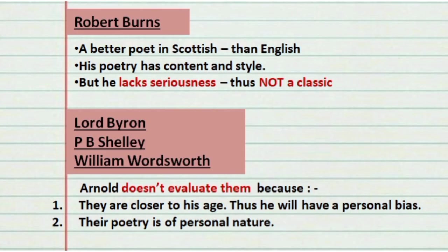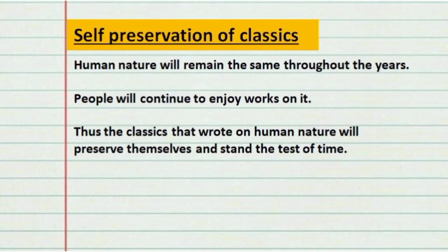Finally, regarding the Romantics — Lord Byron, P.B. Shelley, and William Wordsworth — Arnold doesn't actually take a stand about them because their age is very close to his own and he might have personal bias. He also thinks their poetry is of a personal nature. He ends the essay by talking about the self-preservation of classics: human nature will always remain the same throughout all ages, so people will continue to enjoy works written about human nature. The classics that wrote on human nature will preserve themselves and stand the test of time.